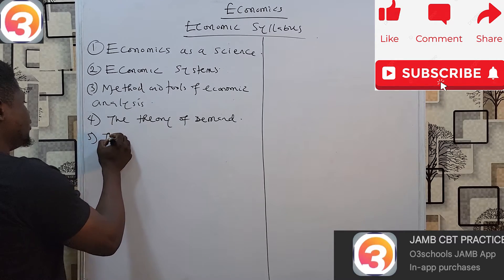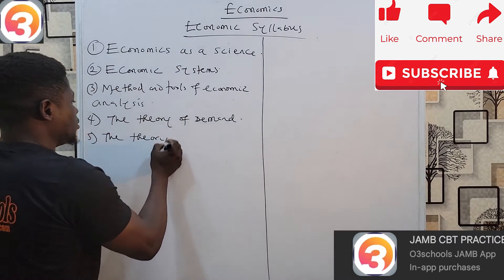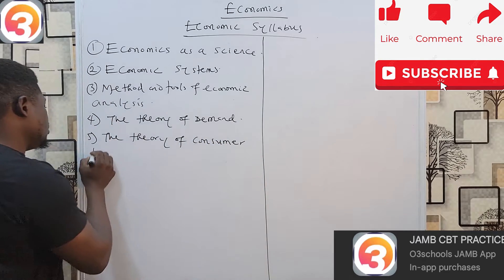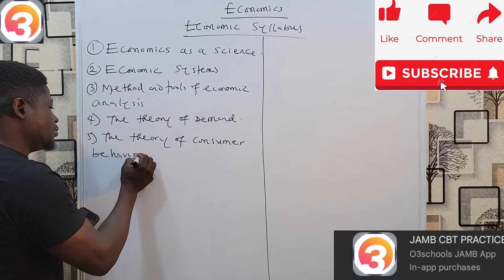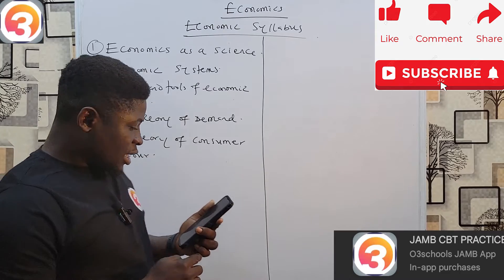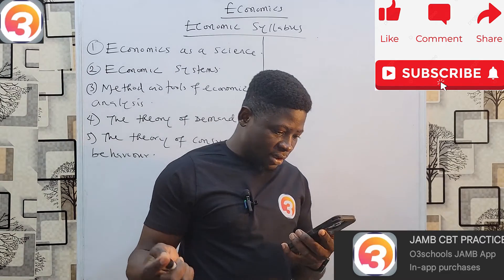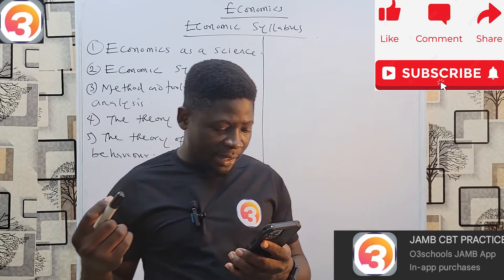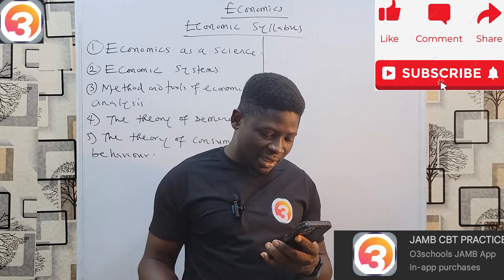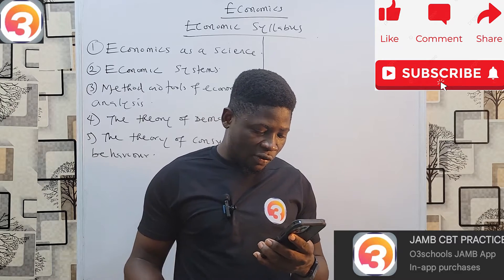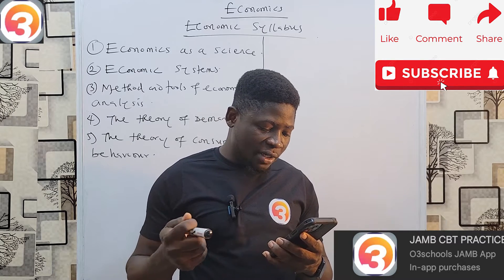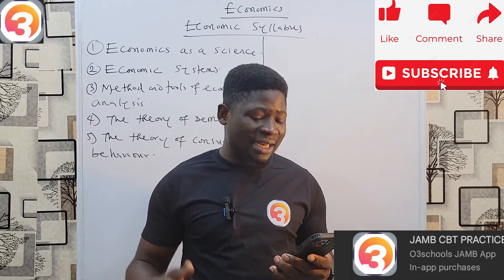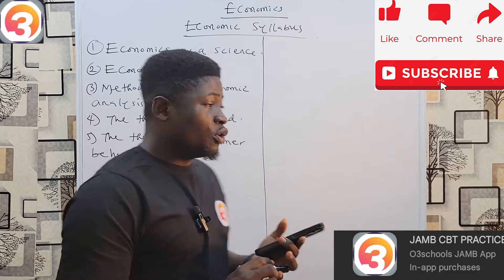Number five is the Theory of Consumer Behavior. Under this, look at basic concepts such as utility, the indifference curve, and the budget line. Look at diminishing marginal utility and the law of demand. Look at consumer equilibrium, effects of shifts in the budget line, consumer surplus, and its application.